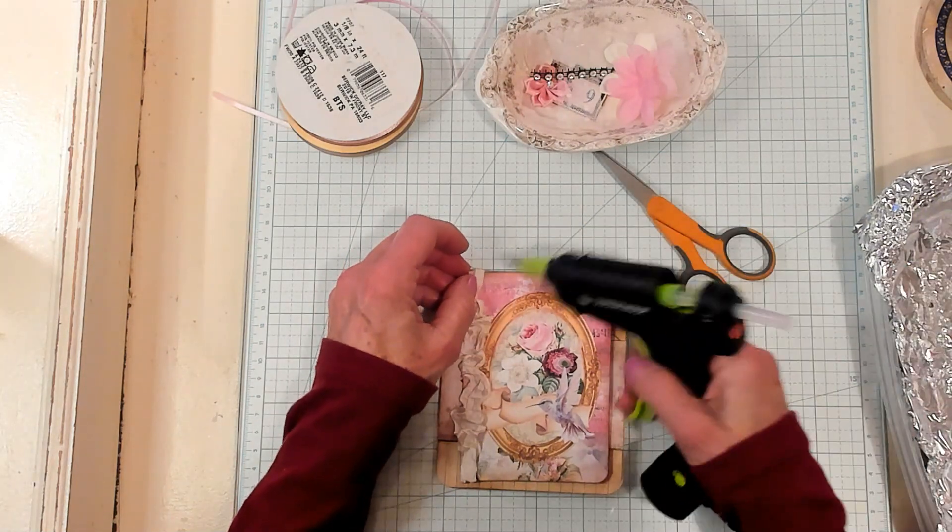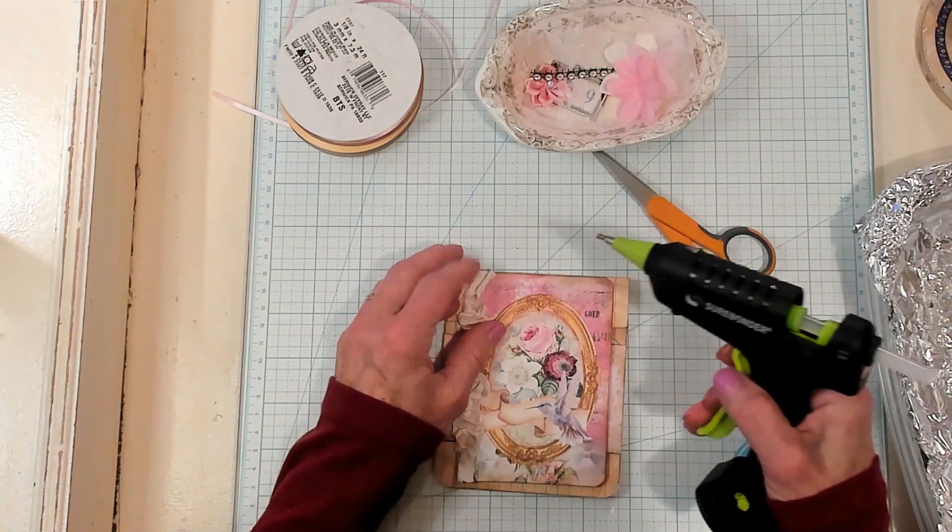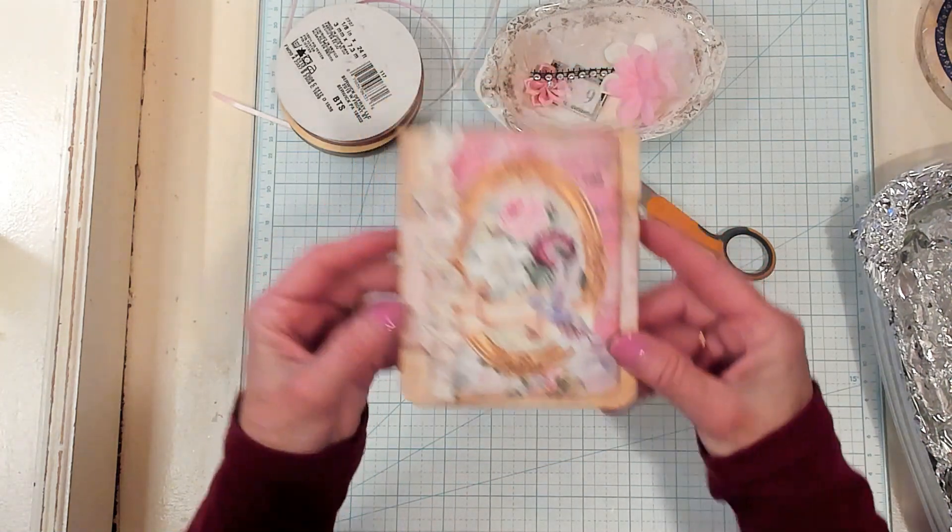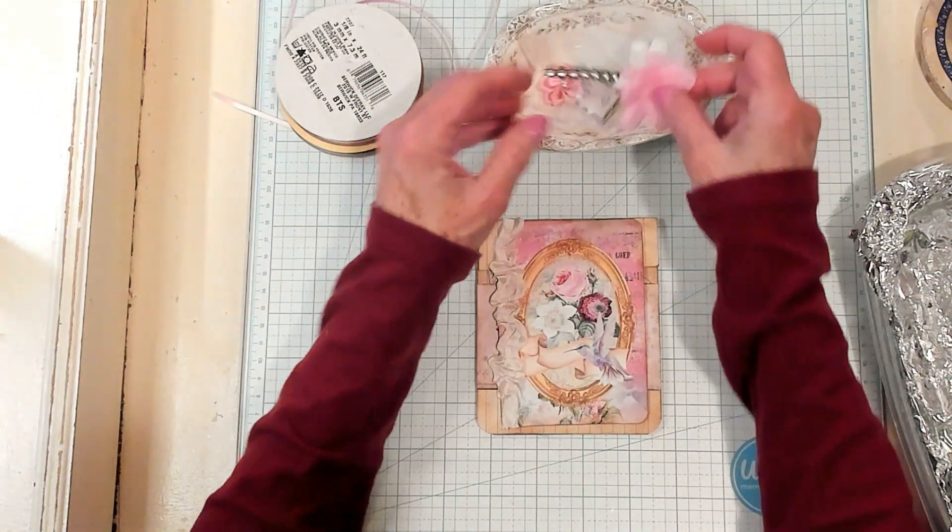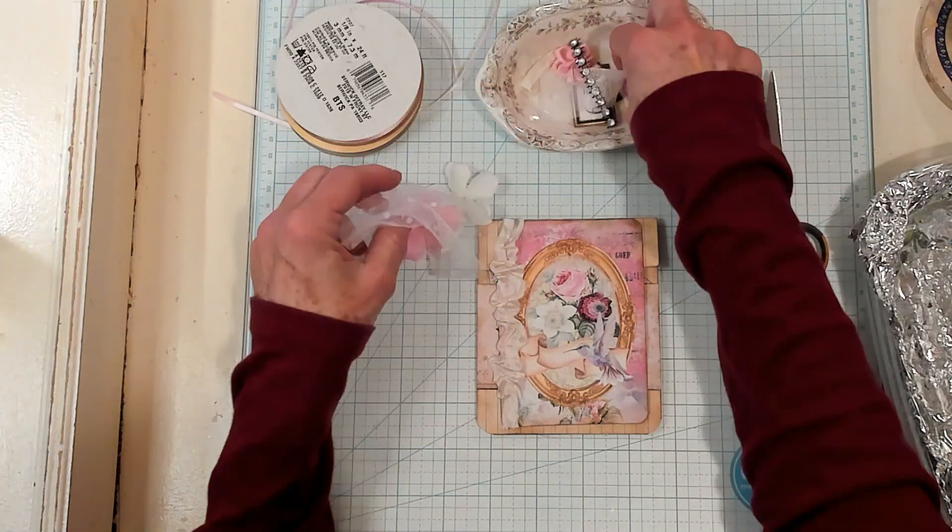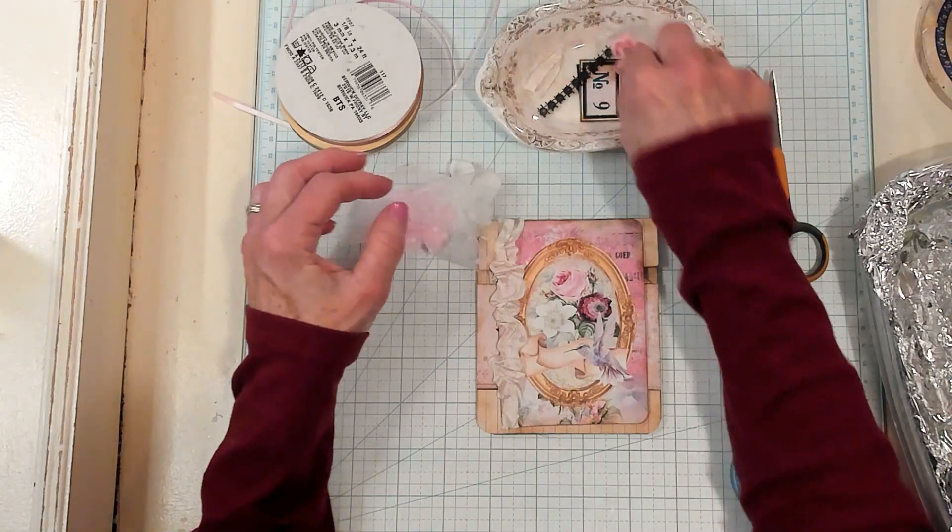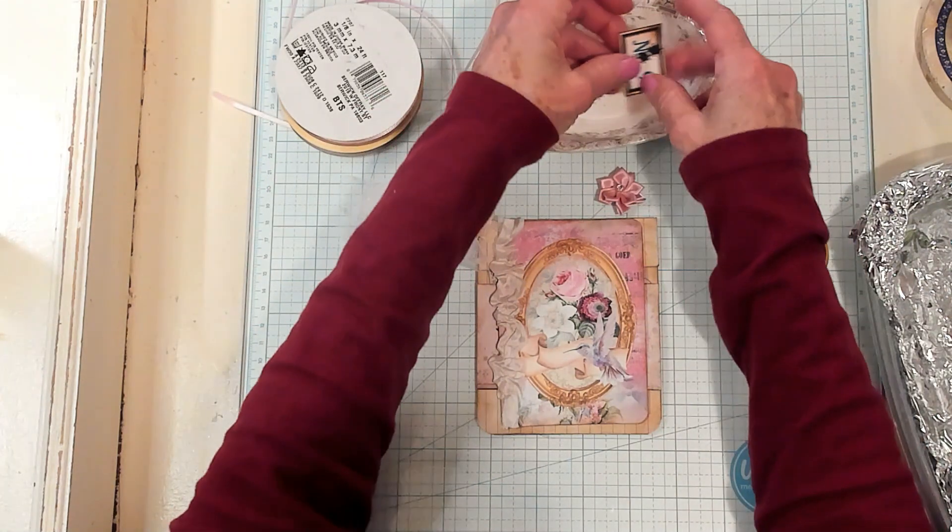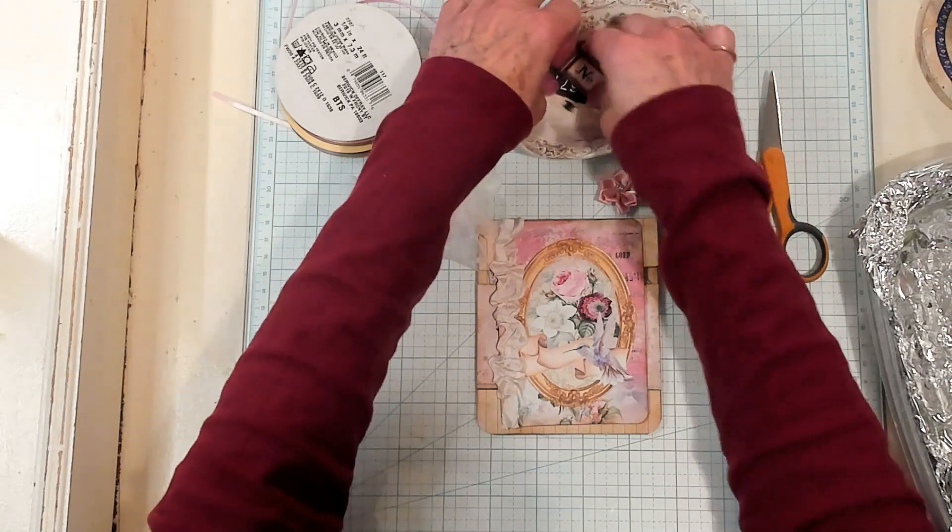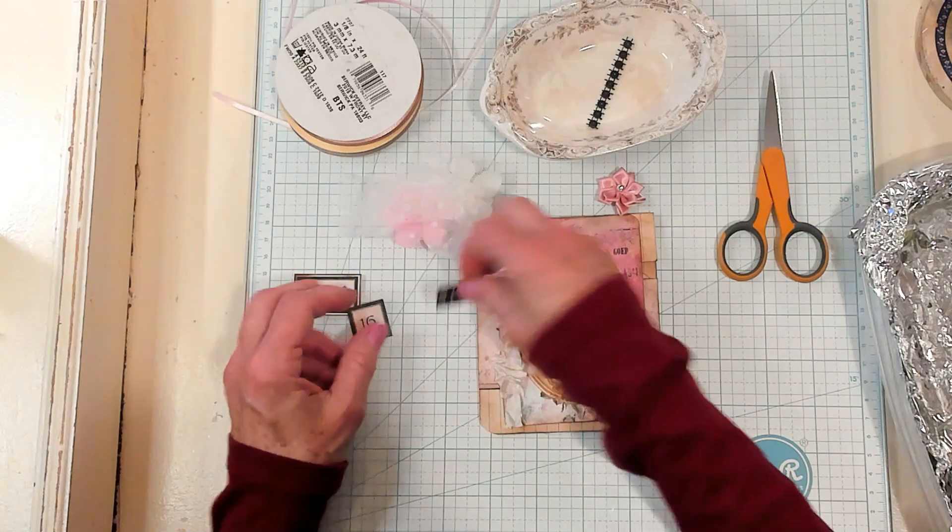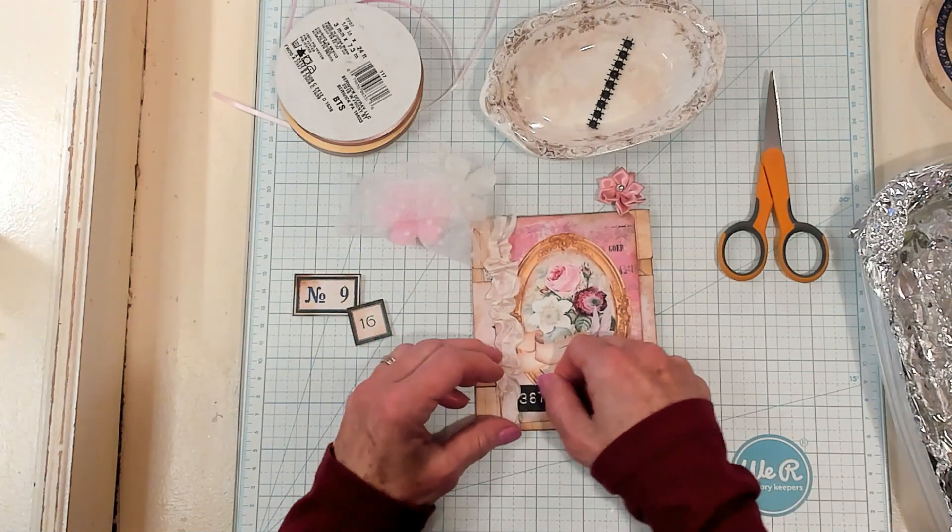So, let's go ahead and glue the end down a little better. Oh my goodness, that's pretty, isn't it? I have some little silk flowers here. I have a little bit of net. I have some bling. I have a ribbon flower. And I have a label, a couple of labels. I thought maybe a label might be nice on here. I'm not sure which one. I'm kind of leaning towards this dark one.